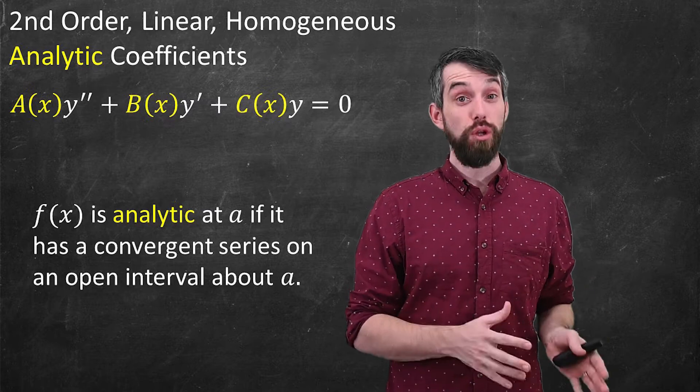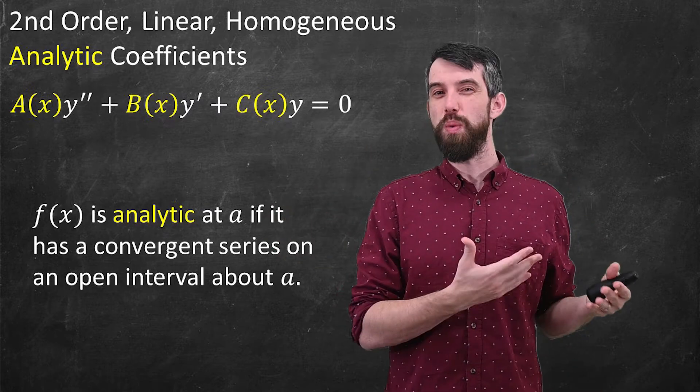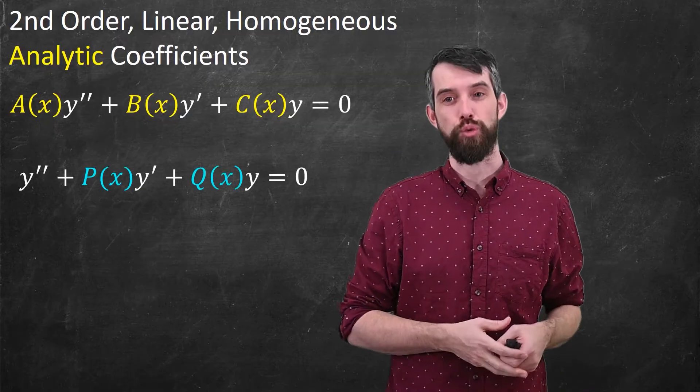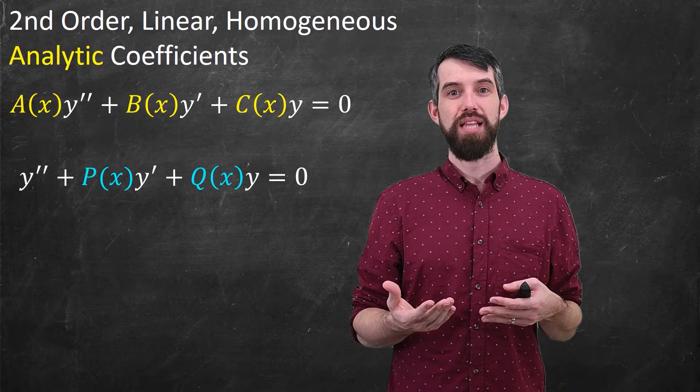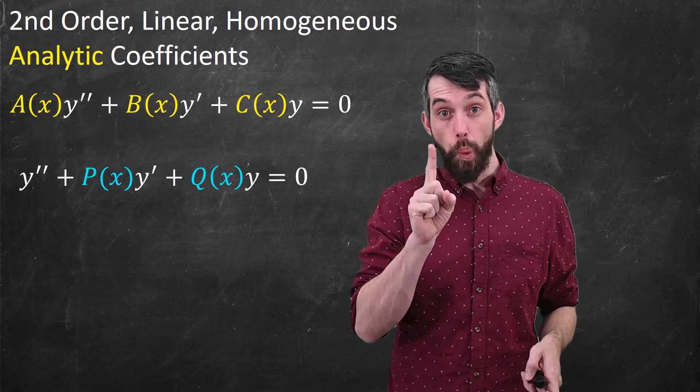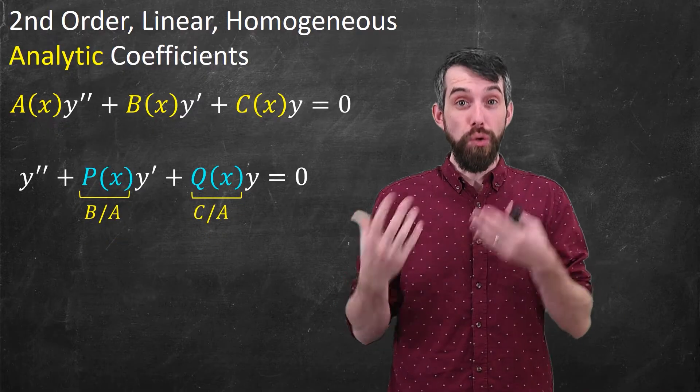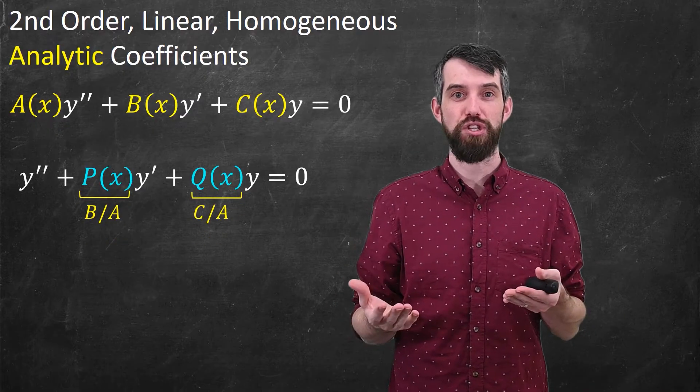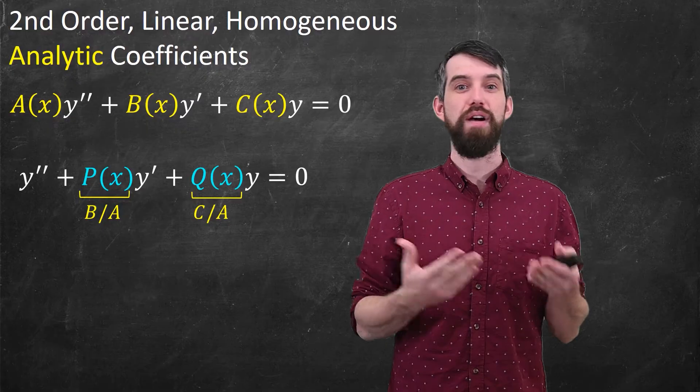While differential equations are often presented in this form, one of the things we want to do first is actually divide through by A of x. That is, I want the coefficient of A of x to be one, and that means that I get these new things, P of x and Q of x, which are just B divided by A and C divided by A, respectively.